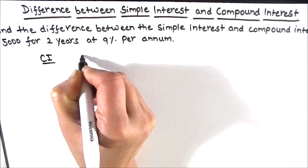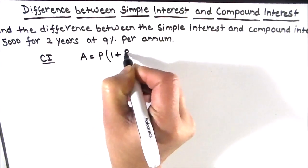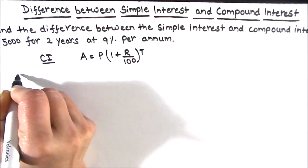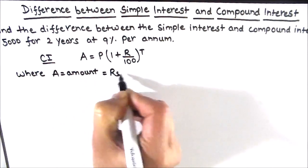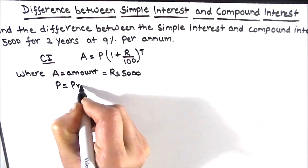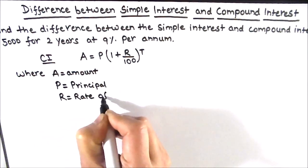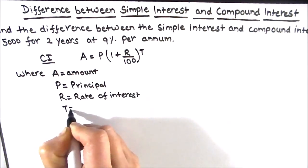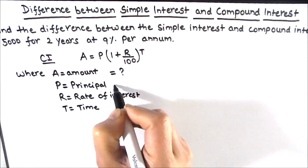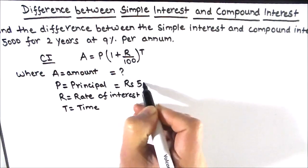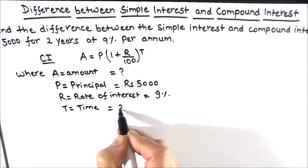The formula we are going to use to find compound interest: first we find the amount, which is A = P × (1 + r/100)^t, where P is the principal, r is the rate of interest in percentage, and t is the time period in years. Here, principal is given as rupees 5000, rate of interest is 9%, and time is given as 2 years.